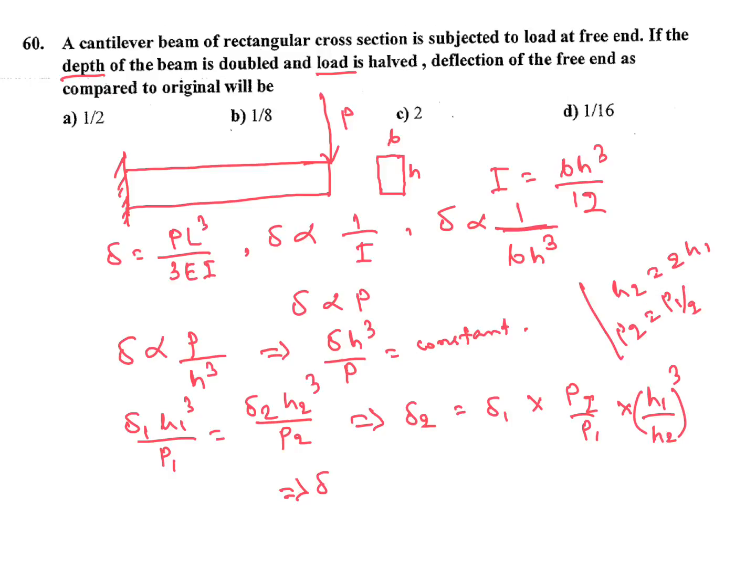So delta 1 into P1 by 2 divided by P1 into H1 by 2H1 whole cubed. P1 P1 cancel, H1 H1 cancel. Delta 1 by 2 into 2 cubed is 8, so it's 16. So answer is delta 1 by 16 compared to original. From option D, the answer.